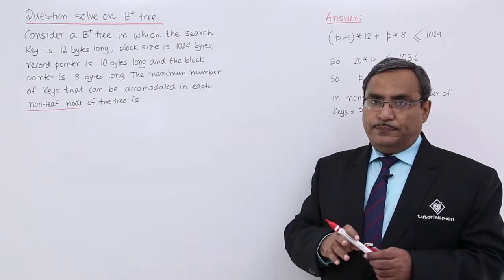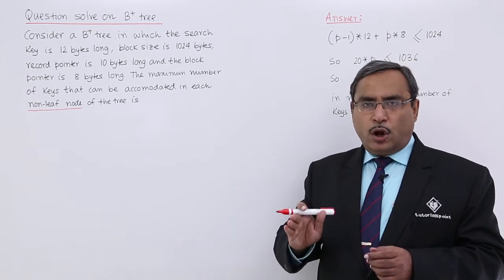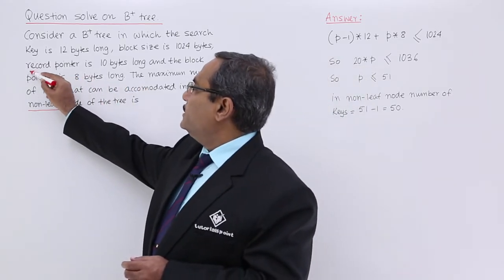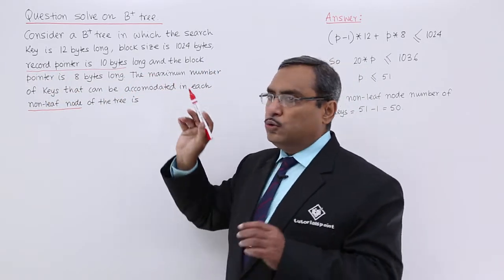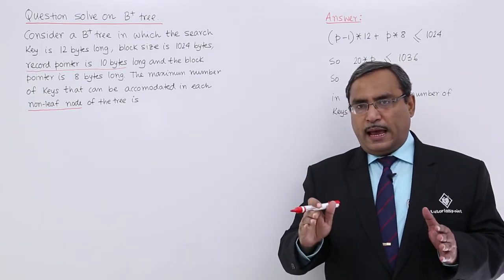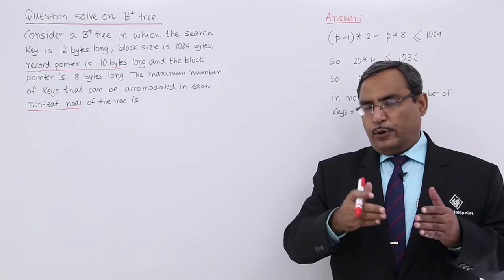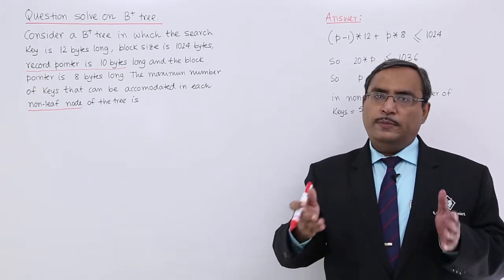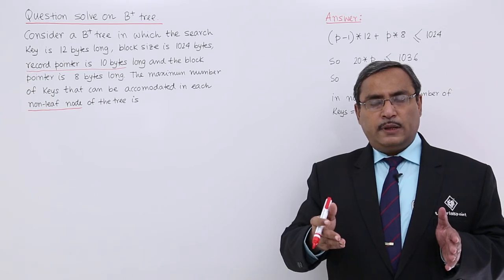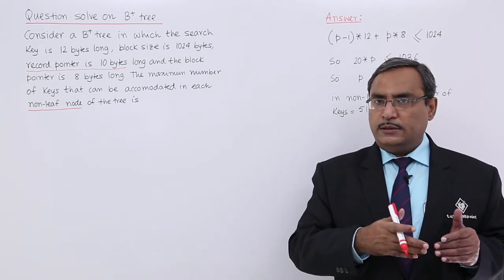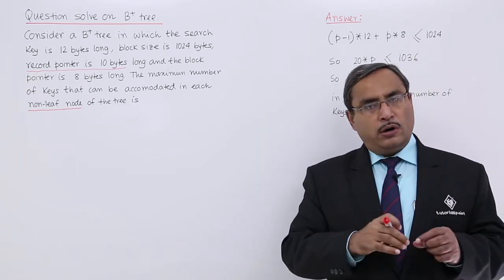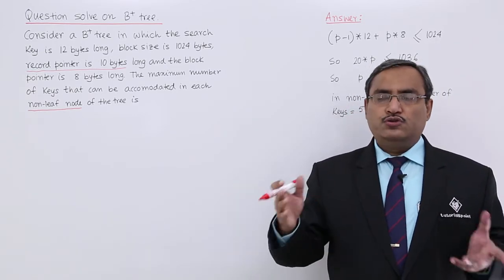So how to calculate this one? As it is a non-leaf node, I think this record pointer is not required. So this part we are not going to use, because in case of non-leaf nodes we will be having block pointer fields and search key fields. Key fields will be there and block pointer fields will be there, but there will be no record pointer. Record pointer fields will be available only at the leaf nodes.